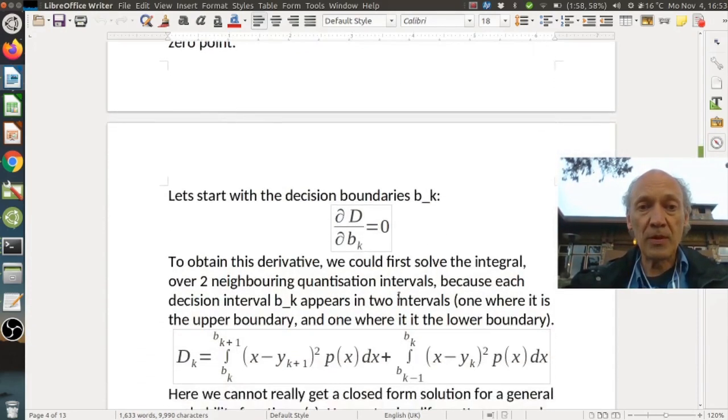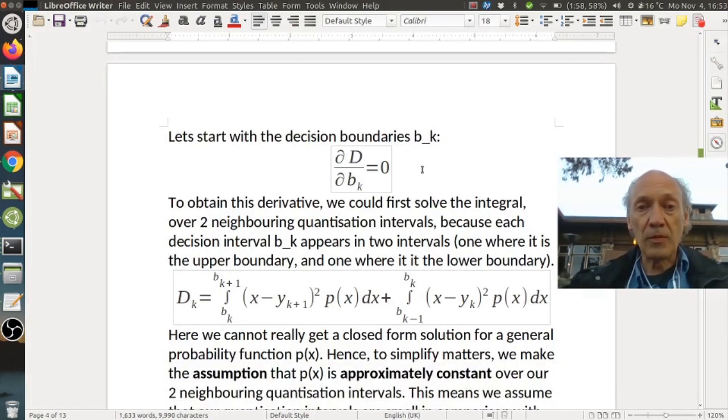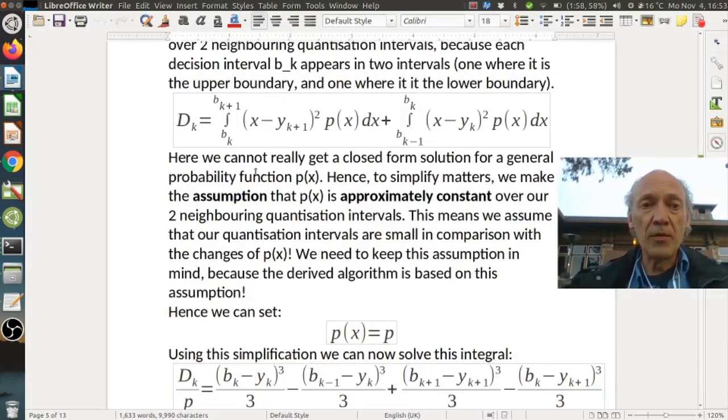Hence we need to take the first derivative of the distortion d with respect to those variables and obtain the zero point where we basically have a vanishing gradient or vanishing derivative. So let's start with the decision boundaries b_k. So we need to find the point where the derivative of d with respect to b_k becomes zero because this is a requirement for the minimum. To obtain this derivative we could first solve the integral over two neighboring quantization intervals because each decision interval b_k appears in those two intervals. One where it is the upper boundary and one where it is the lower boundary.